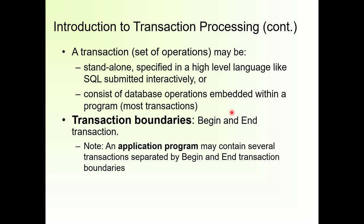To make that transaction, first I send the request. Then I execute the program containing read or write operations. The read operation retrieves information — I need to know the checking account number and the saving account number, which are already stored in the database. Extracting those account numbers is what we call a read operation. After reading, I check the balance in the checking account. If the balance is sufficient, it is possible to transfer $100 from checking to saving.